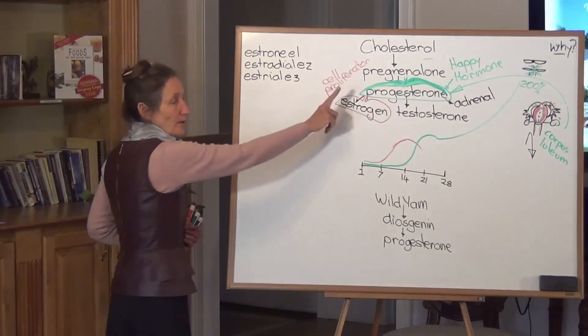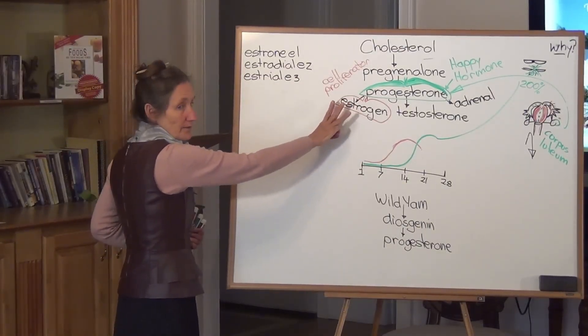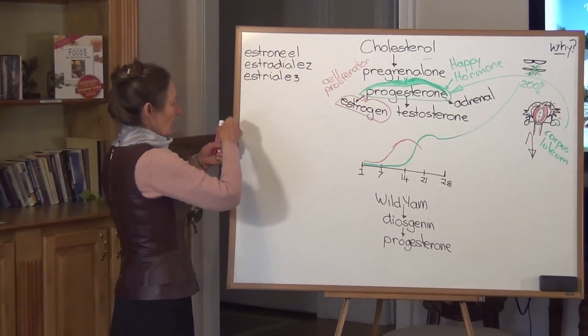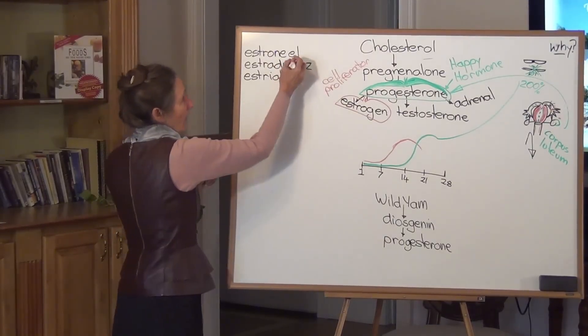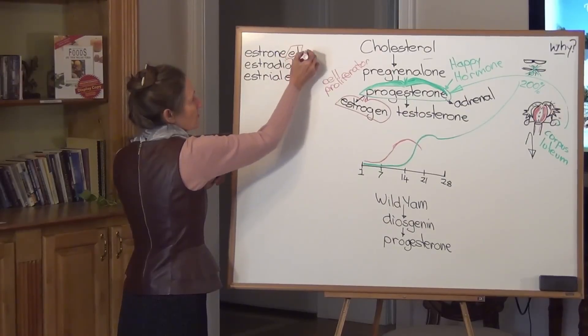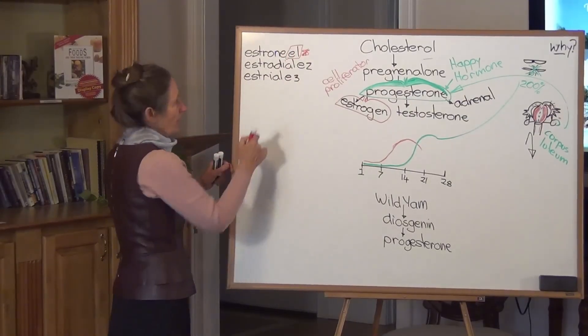Now there is one hormone, progesterone, but there are three hormones to make up estrogen. There's estrone, and that's called E1. And E1 has strong cell proliferator action on the body. There's estradiol, and it's called E2. And it has strong cell proliferator action.